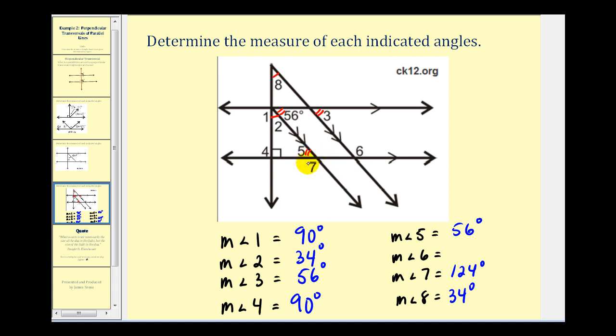And then notice that angle six and angle seven are alternate exterior angles using these slanted parallel lines, and therefore they're congruent.